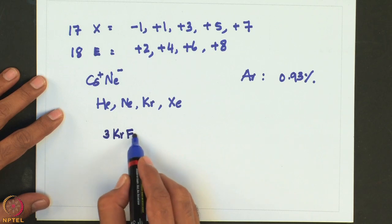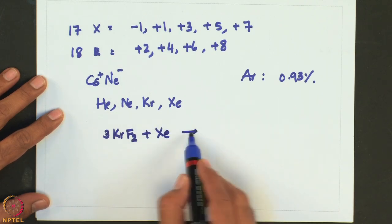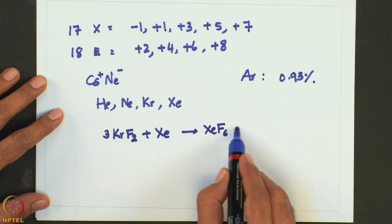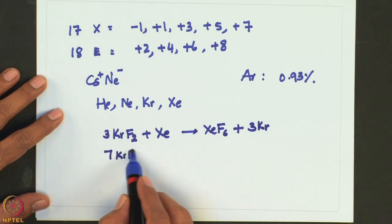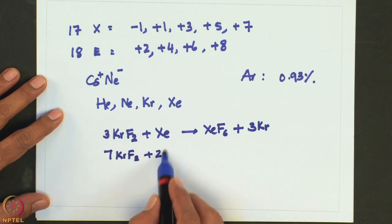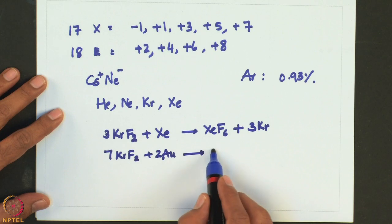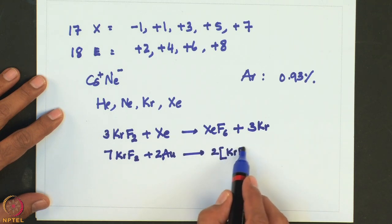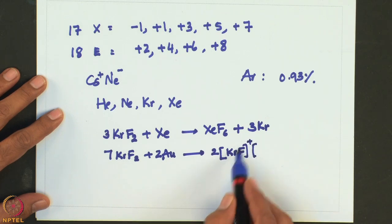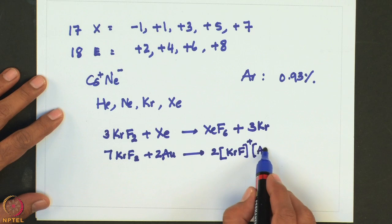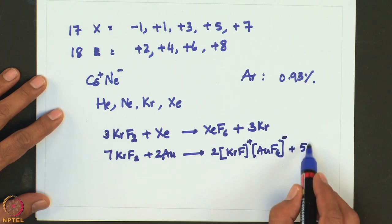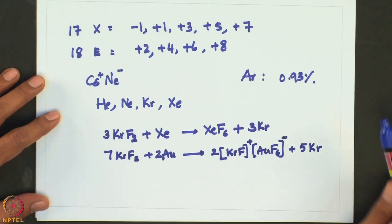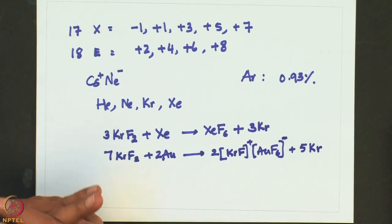It will oxidize xenon to xenon hexafluoride and also metallic gold to the gold hexafluoride anion. For example: 3 KrF2 + Xe → XeF6 + 3 Kr, and 7 KrF2 + 2 Au → 2 AuF6⁻ + ... + 5 Kr. In the gold product, gold is in the +5 oxidation state.